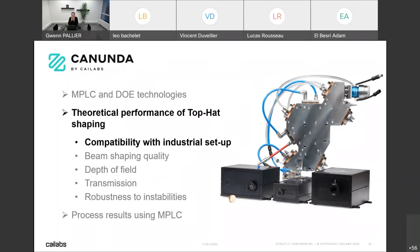At Kylabs we've realized that the optical and process communities are often unfamiliar with what makes a good or bad beam shape. It's worth spending time on the criteria. We'll compare an MPLC-based Canunda Pulse system — with a beam expander — against a DOE plus lens system with a telescope to match output size. Key criteria include: compatibility with industrial setup, shaping quality, depth of field, transmission, and robustness to instabilities.